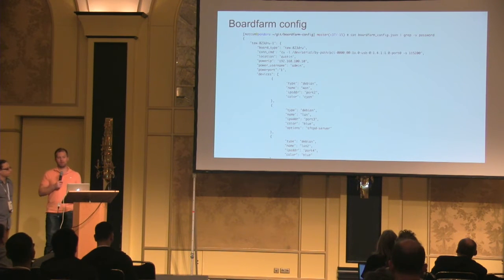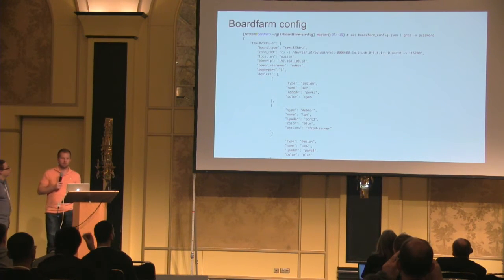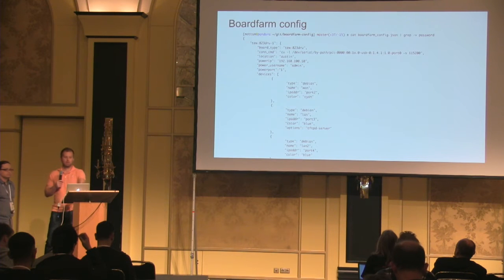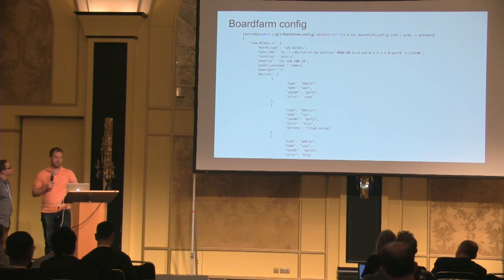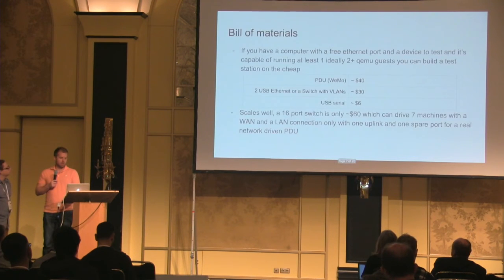This is an example of the configuration — you're basically just describing a board and how to connect to it: board name, board type, how you connect. This can be a telnet to a serial server, or CU or Kermit to a local port. You describe how to reset the board, and there's a way to describe all devices connected to it — a Debian image, IP address, color, and name. You don't have to have devices; you could just use a serial connection.